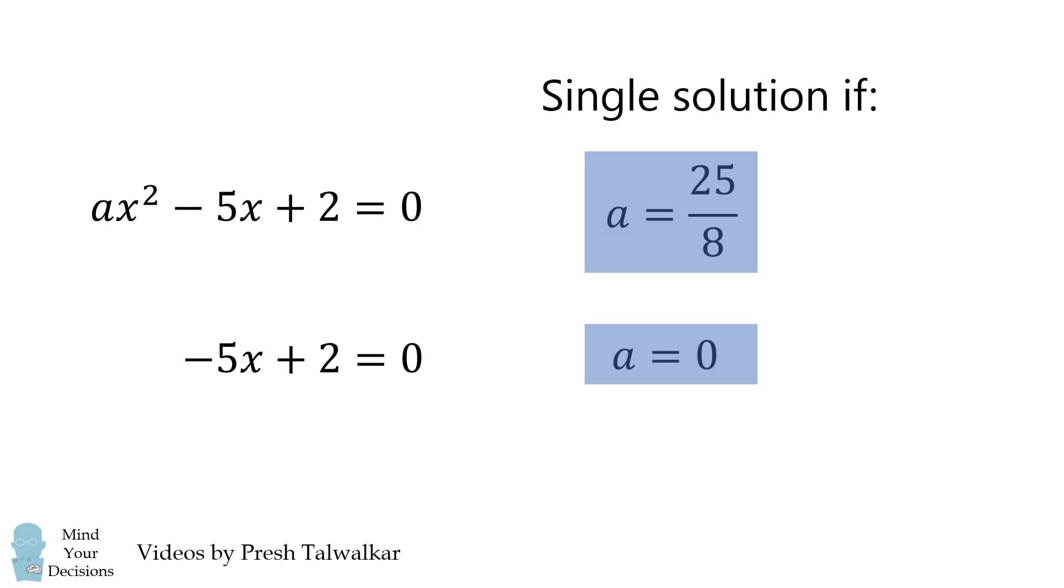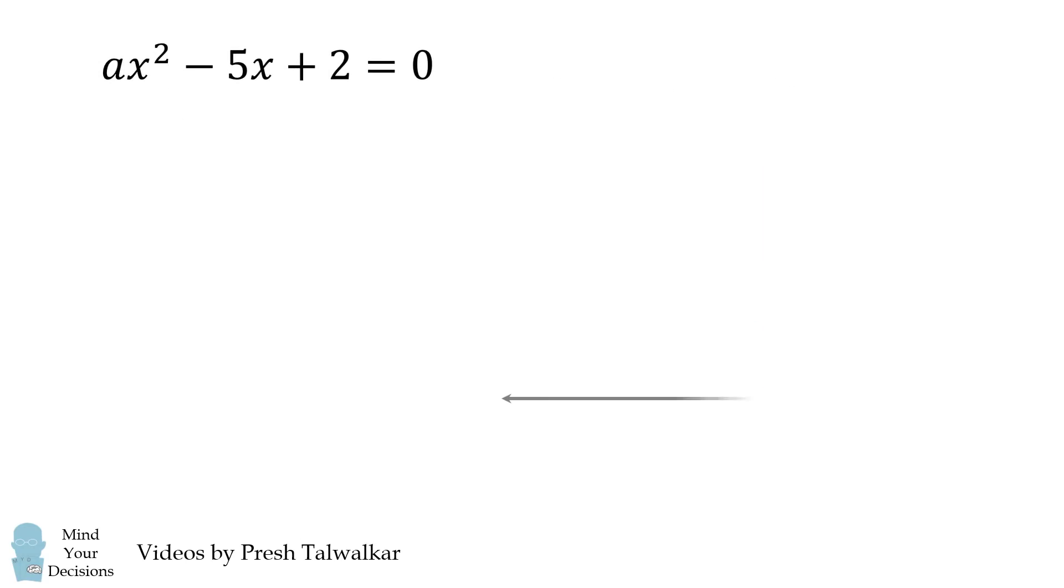I also think it's fun to visualize this problem. Let's plot this equation for a = 2. We get a parabola which has two x-intercepts, which are the two solutions. As we vary the parameter a,